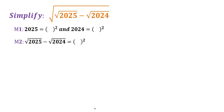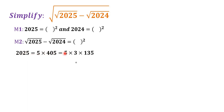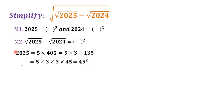Let's try method one and see how to factorize 2025 and rewrite it as something squared. So 2025 equals 5 times 405, then 5 times 3 times 135, then 5 times 3 times 45. Here 3 times 3 is 9 and 9 times 5 is 45, so 2025 can be written as 45 squared. This is what we want: 2025 is 45 squared.